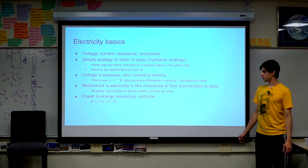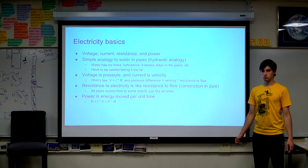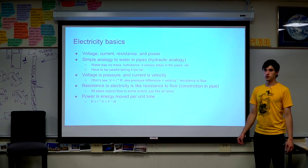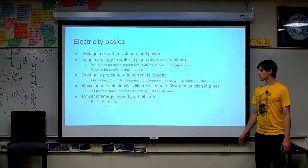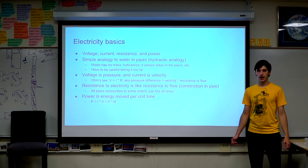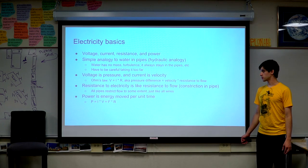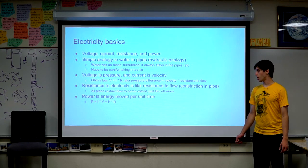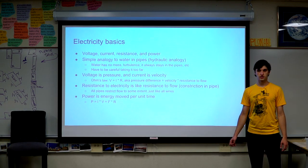Current for electricity is like the velocity of the water in the pipes, which is also where you get Ohm's law. Ohm's law is V = I × R: voltage equals current times resistance. For the water analogy, pressure difference equals velocity times resistance to flow. Resistance is like a small aperture in your pipe that's hard for water to flow through. Just like all pipes restrict flow to some extent, all wires have some resistance.